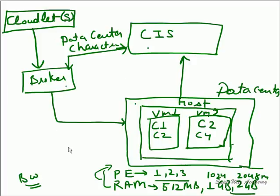There are a number of different classes which produce the specific behavior desired by this simulation model. To summarize: the whole framework model is based on creating CIS, registering data center objects to CIS, the data center holding hosts (each with their own hardware characteristics), creating virtual machines inside hosts, creating one broker, creating a set of cloudlets, submitting those cloudlets to the broker, and the broker executing them on the available physical resources through the virtualization process.